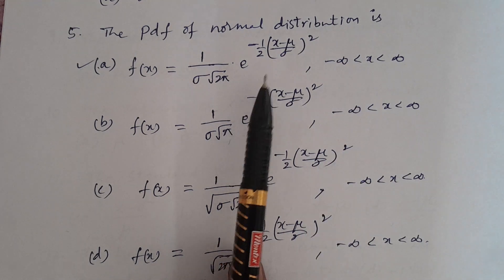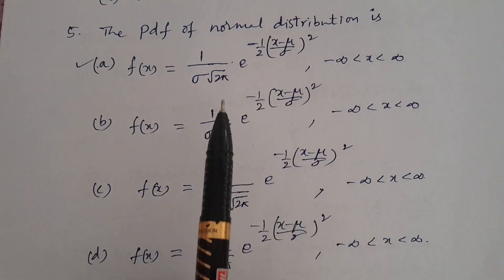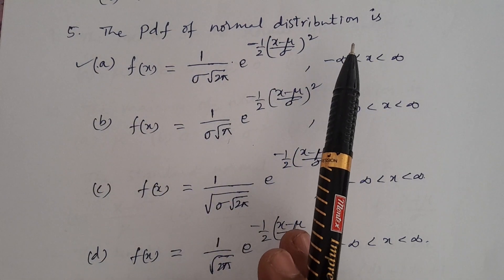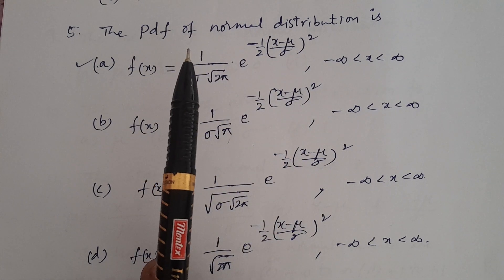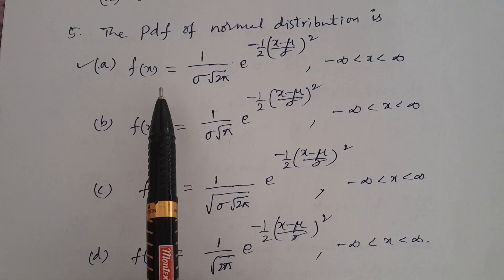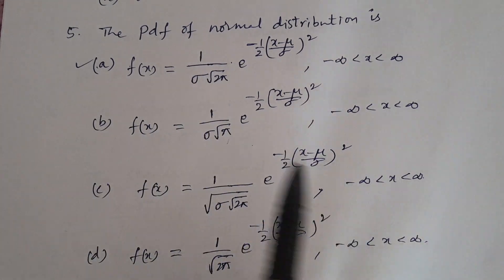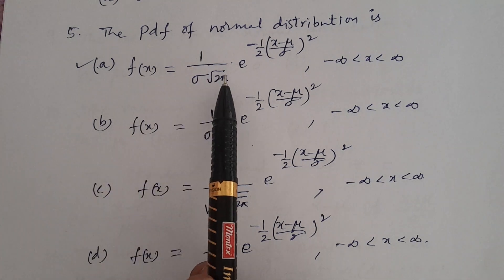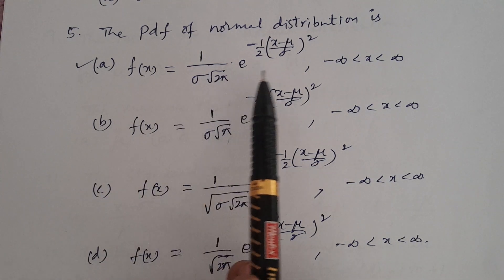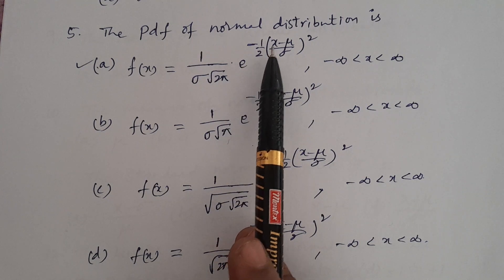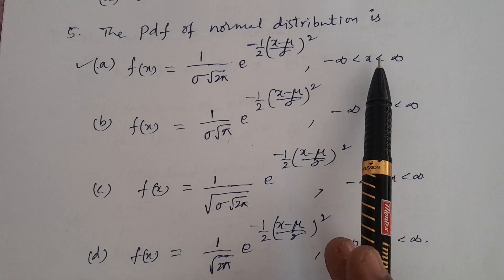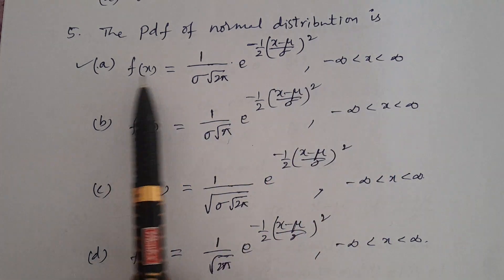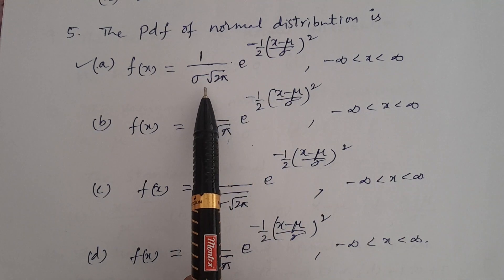Probability density function of normal distribution. In Telugu: The PDF of normal distribution — f(x), small f of x — the correct answer is f(x) = 1/(σ√(2π)) · e^(−1/2·((x−μ)/σ)²), limits minus infinity to infinity. That is the PDF of normal distribution.